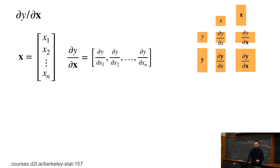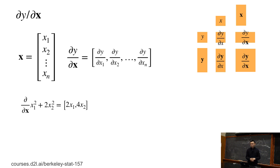In the first case, x is an n-dimensional vector from x1 to xn, and y is a scalar. Then partial y over partial x is a row vector whose i-th element is the derivative of y with respect to xi. For example, if y equals x1 squared plus 2 times x2 squared, the first gradient element with respect to x1 is 2 times x1, and the second element with respect to x2 is 4 times x2.